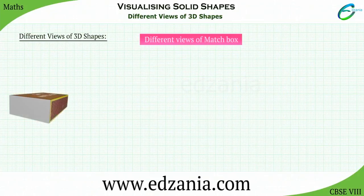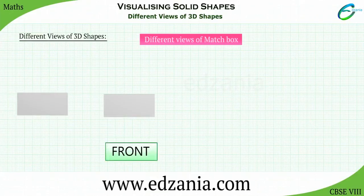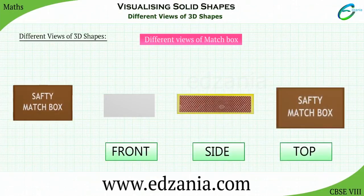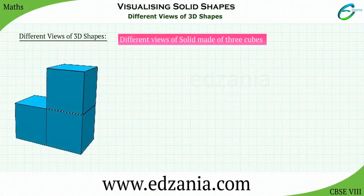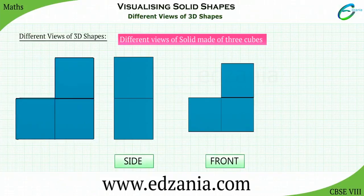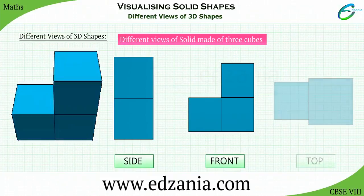Observe the different views of the matchbox. Front view of the matchbox, side view of the matchbox, and the top view of the matchbox. Here is a solid made of 3 cubes. Can you guess the different views of this solid? Side view of the solid, front view of the solid, top view of the solid.